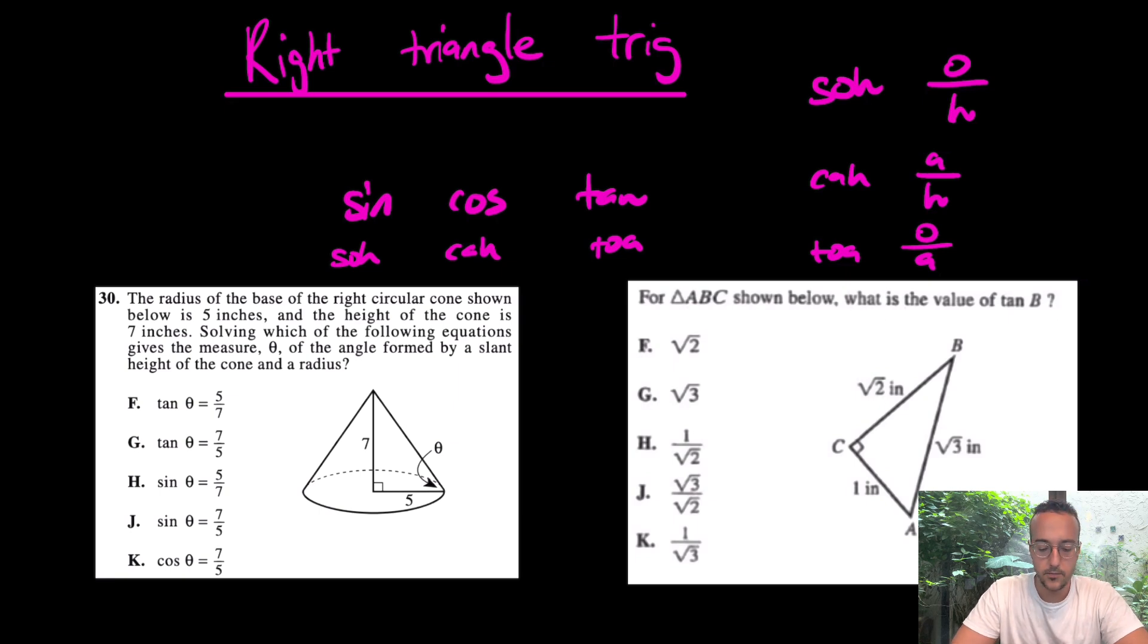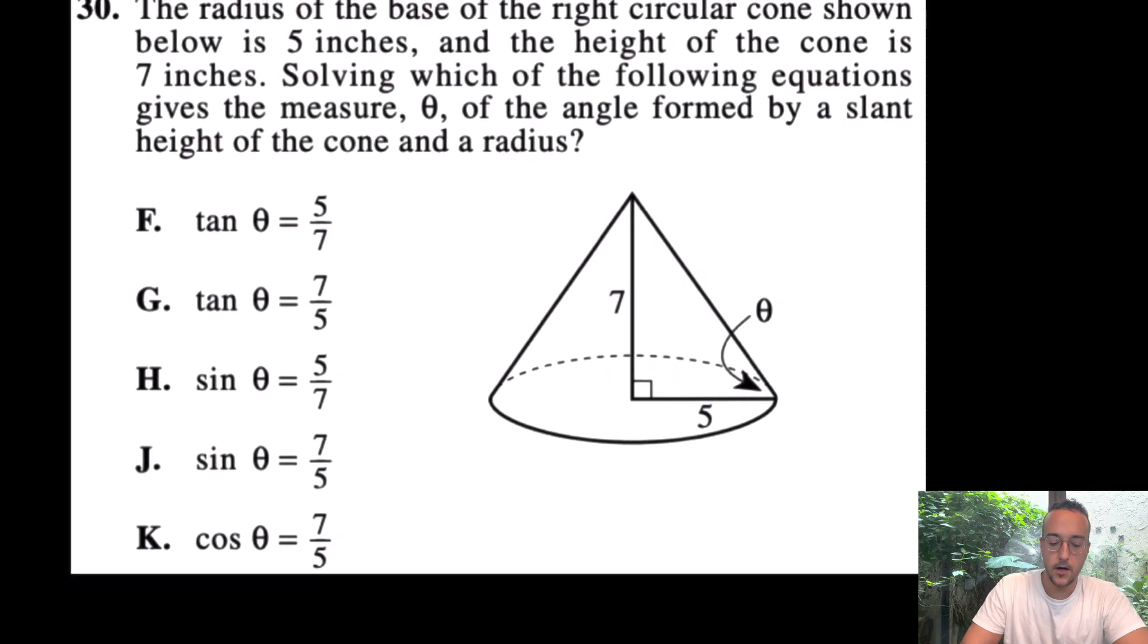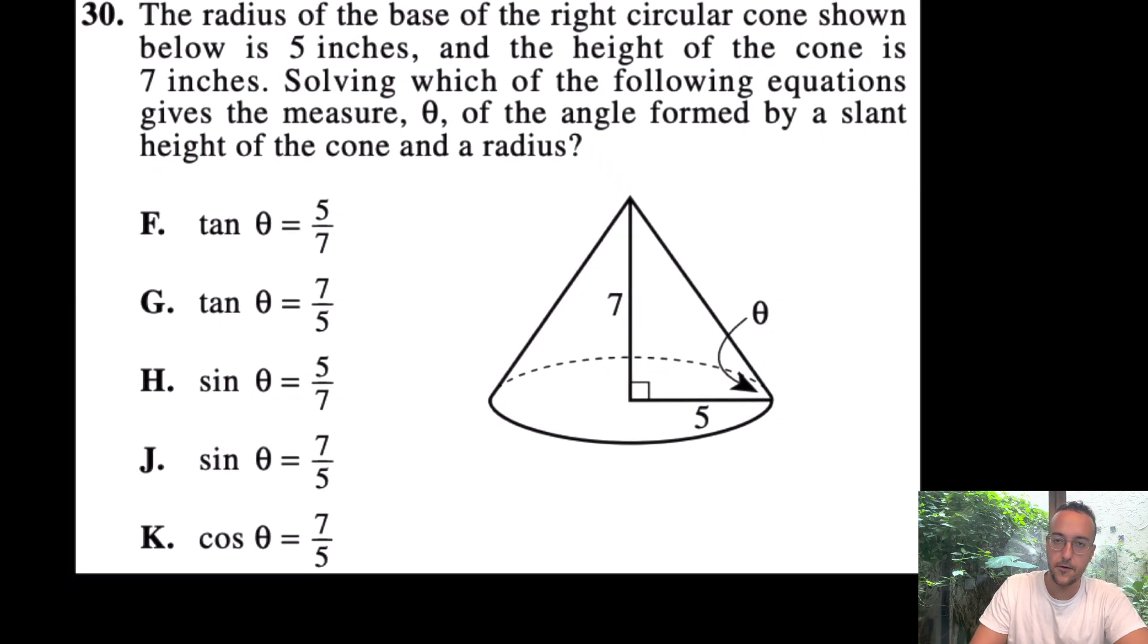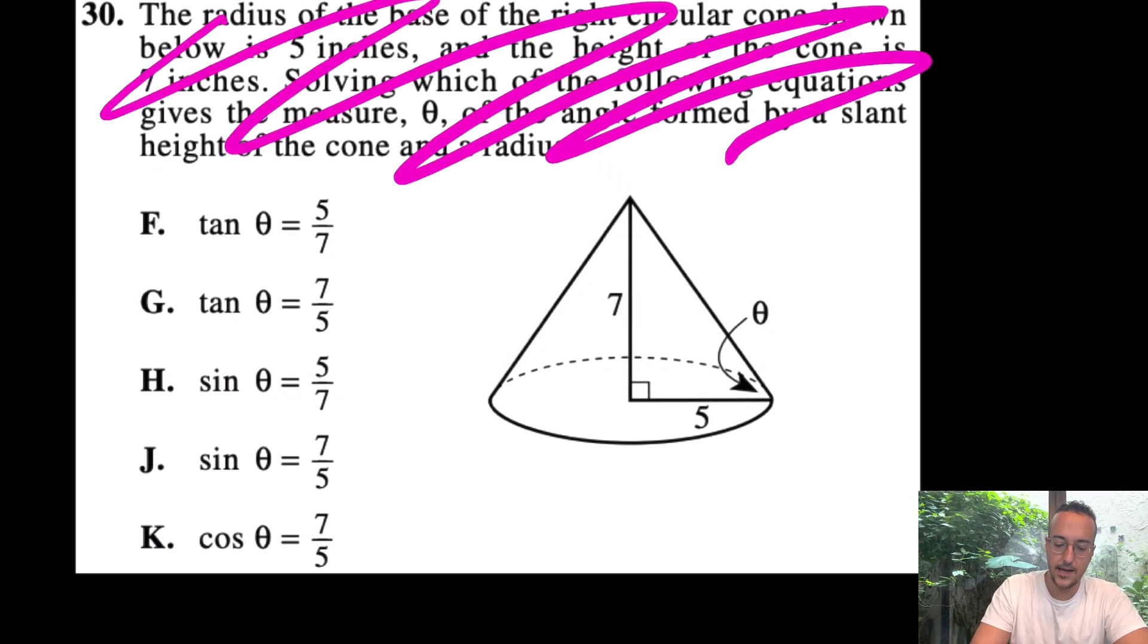In that case, what should we do? Well, first of all, understand for a question like this, number 30, I don't read any of this, right? We don't read any of this. It just wants this angle with this side and this side. Which trig function helps you here? I'd argue that it's opposite and adjacent. Opposite and adjacent. Which one is that?